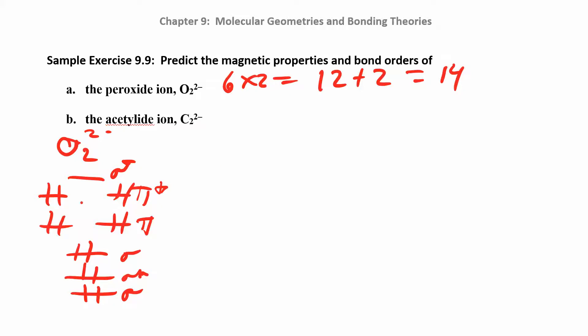For magnetic properties, this is diamagnetic—there are no unpaired electrons. Let's calculate the bond order. One half of... Now, what do you think will happen? When I went from O2 to O2 2 minus, I put two more electrons in these antibonding orbitals, so that's going to decrease the bond order.